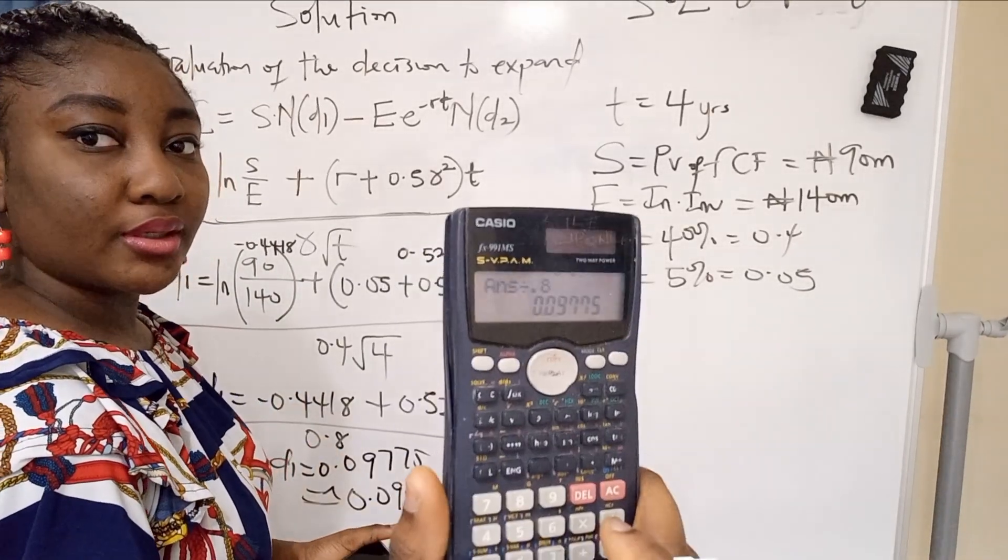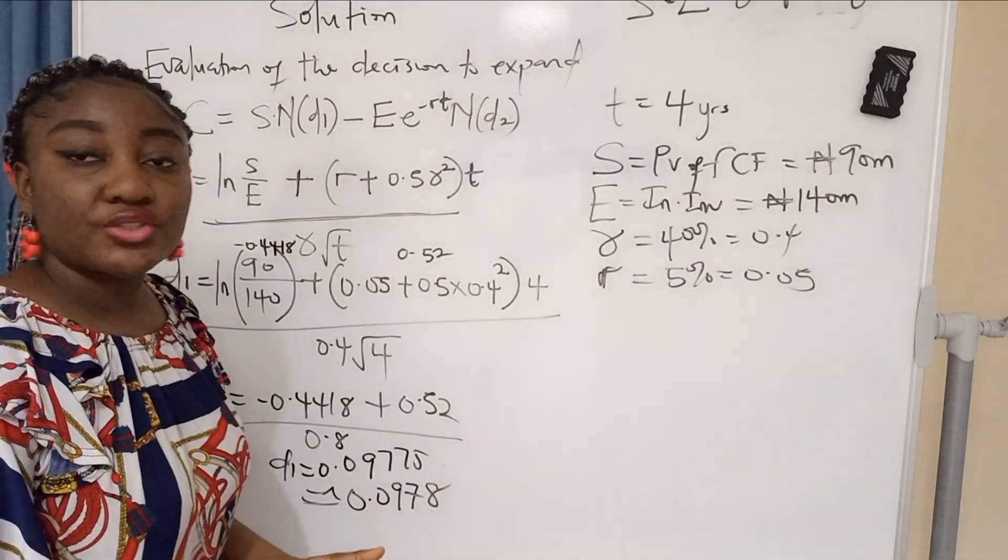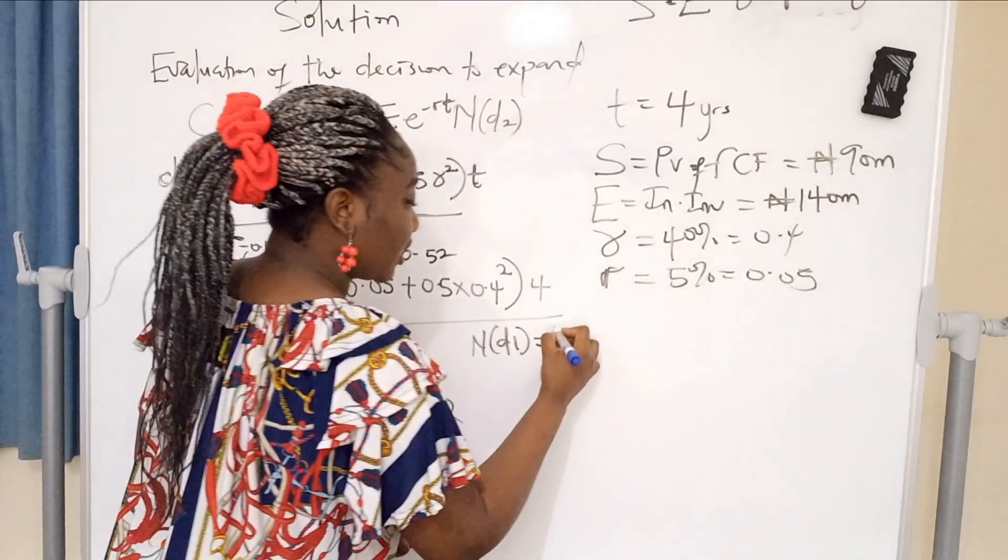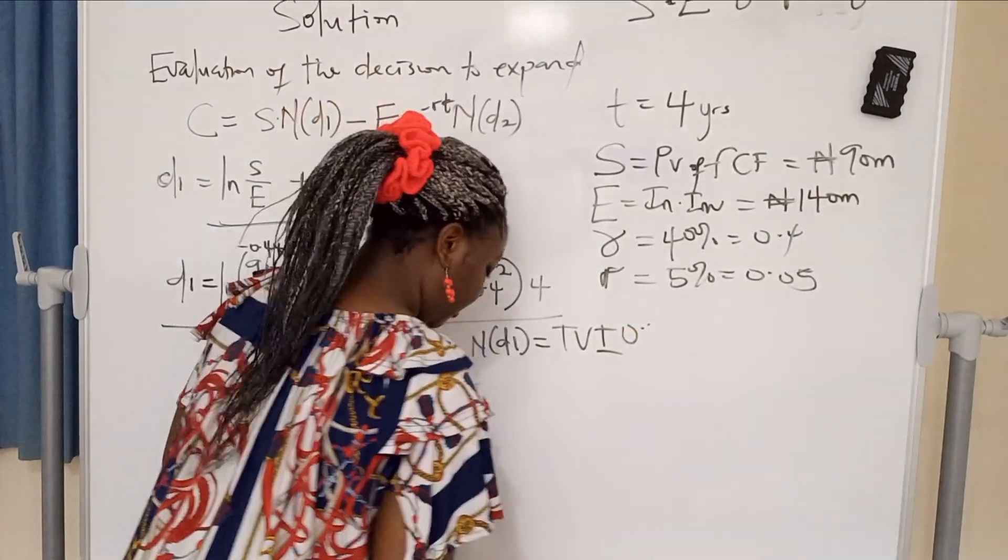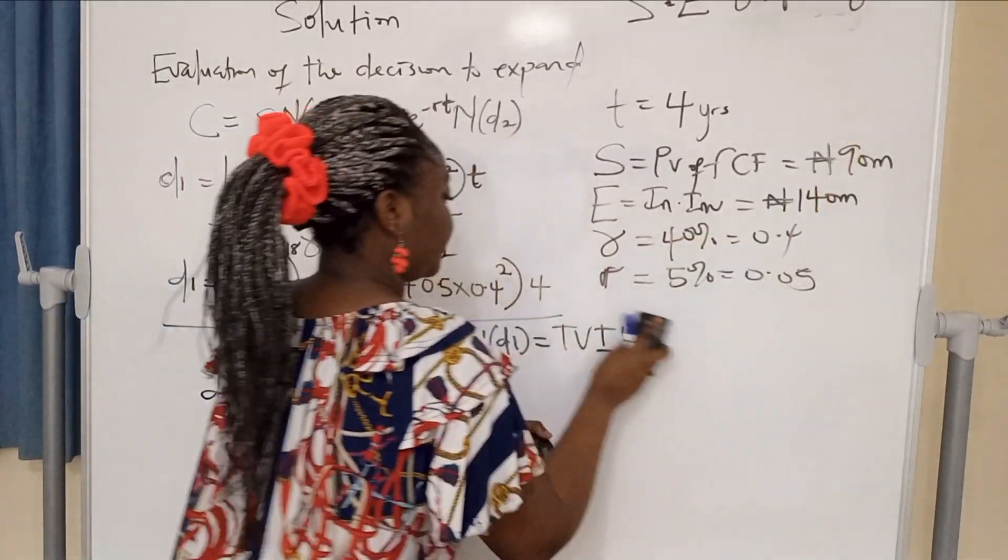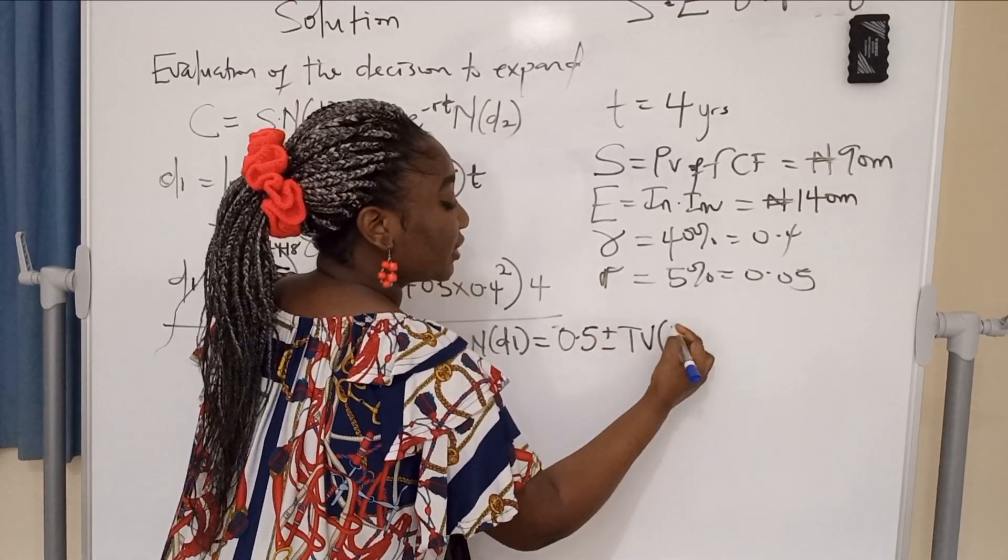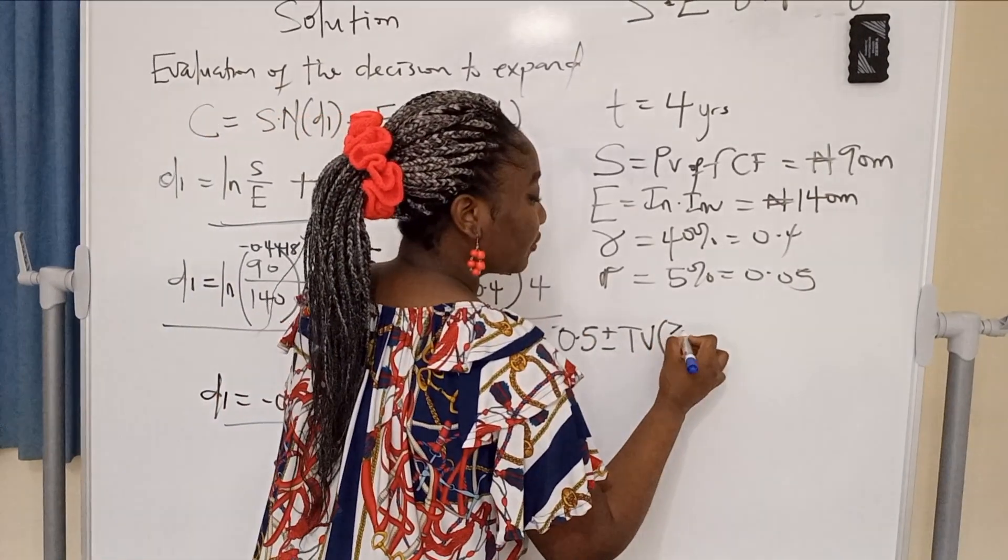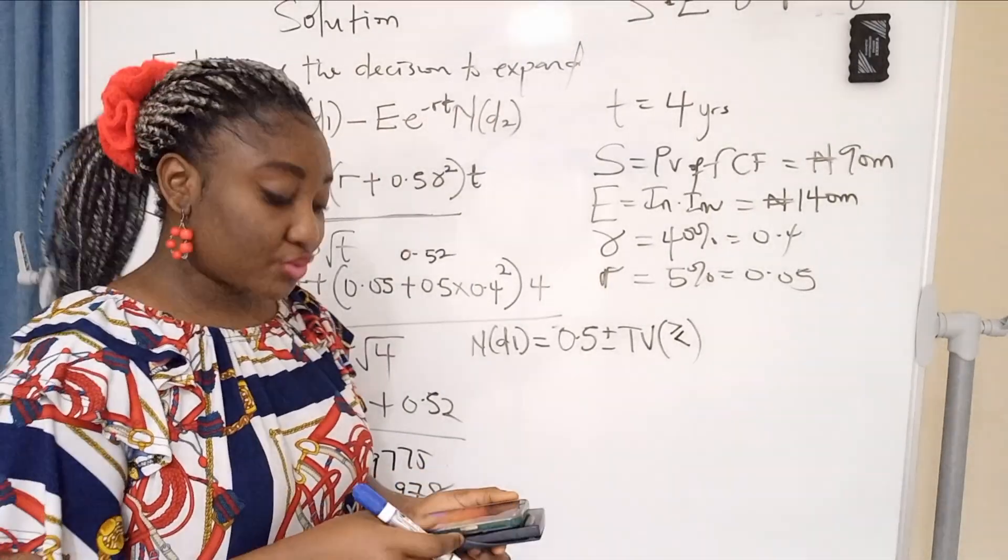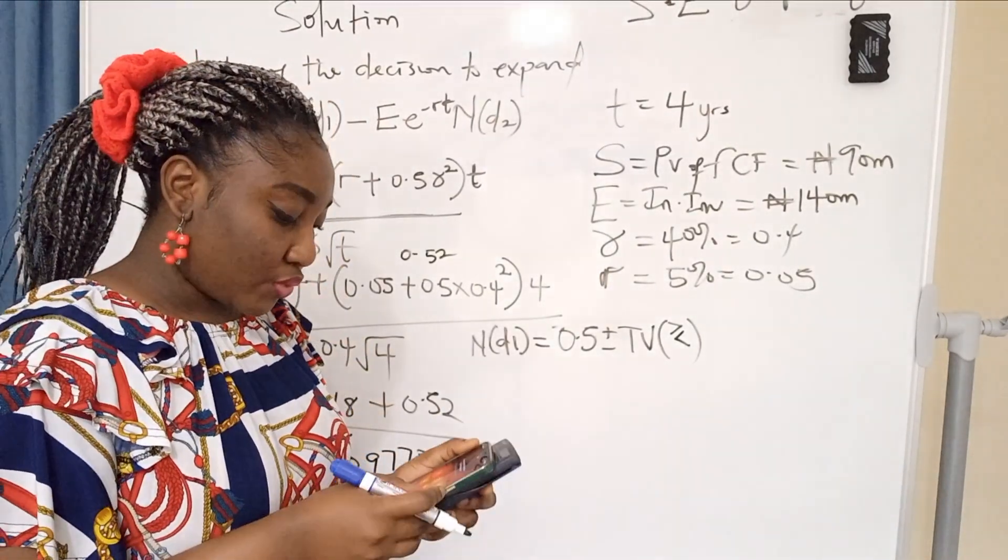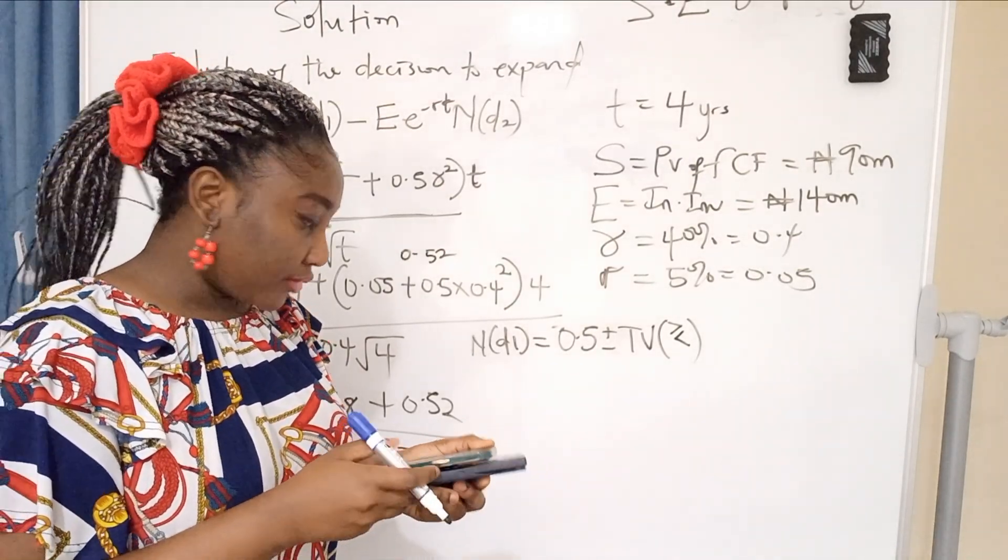So we've got D1. Now get your N(d1). N(d1) is 0.5 plus or minus table value, depending on whether D1 is positive or negative, less than 0 or greater than 0. So you go to your table value, which is also at the back of your exam question.